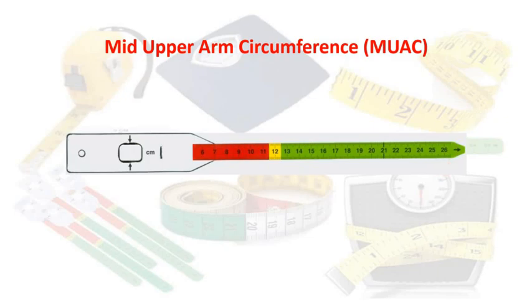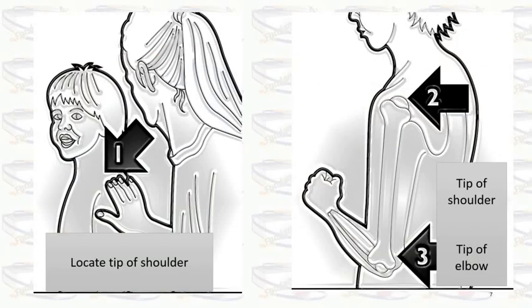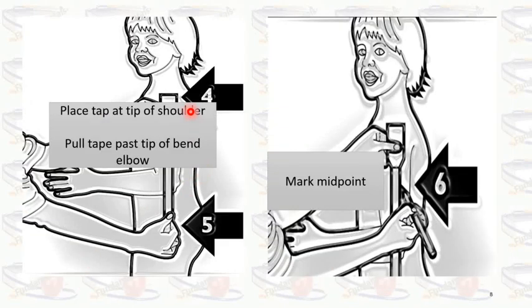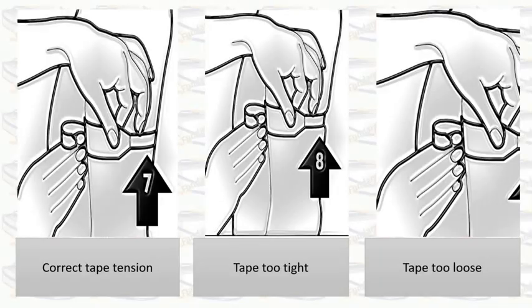MUAC is the circumference of the upper arm, measured at the midpoint between the tip of the shoulder and the elbow. First, locate the tip of the shoulder, then bend the arm and locate the tip of the elbow. Place the tape on the tip of the shoulder, bend it down to the elbow, and mark the midpoint. With the arm hanging straight down, wrap the MUAC tape around the arm at the midpoint mark.